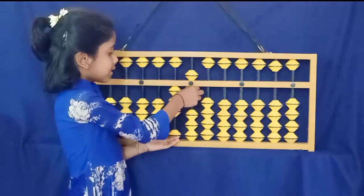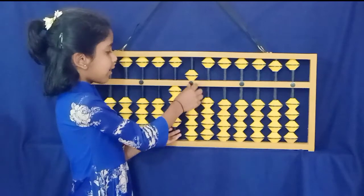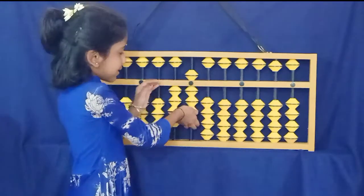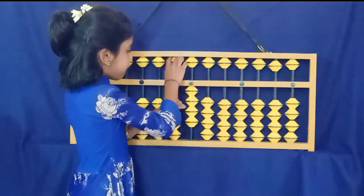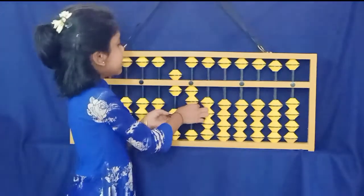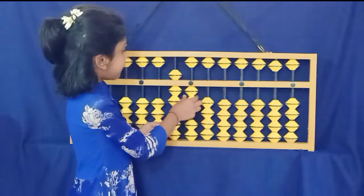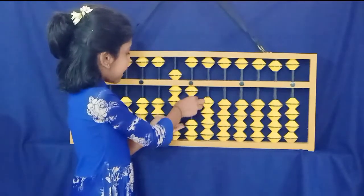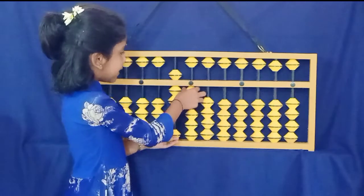9-5s are 45, 9-6s are 54, 9-7s are 63, 9-8s are 72, 9-9s are 81, 9-10s are 90.